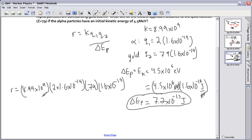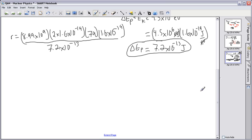times 79 times 1.6 times 10 to the minus 19. All that divided by 7.2 times 10 to the minus 13.